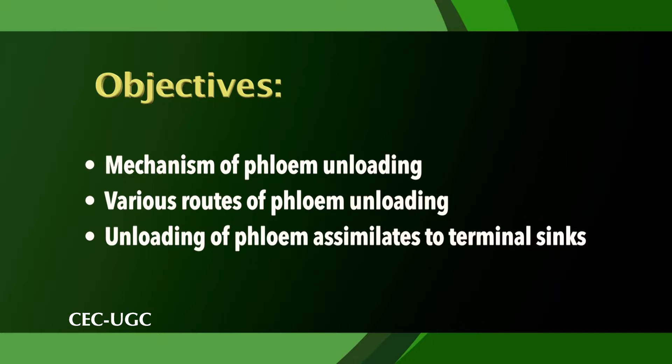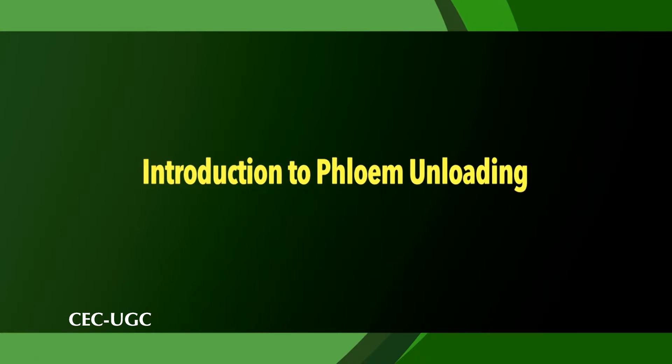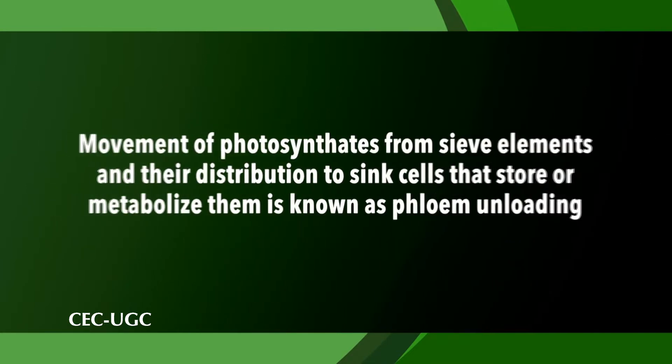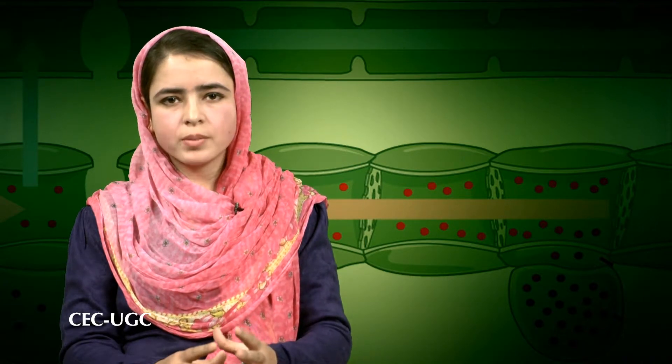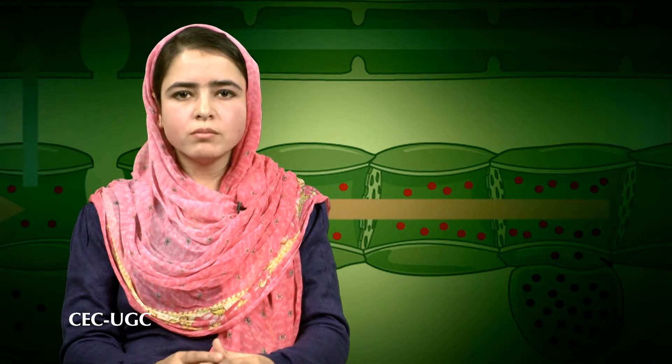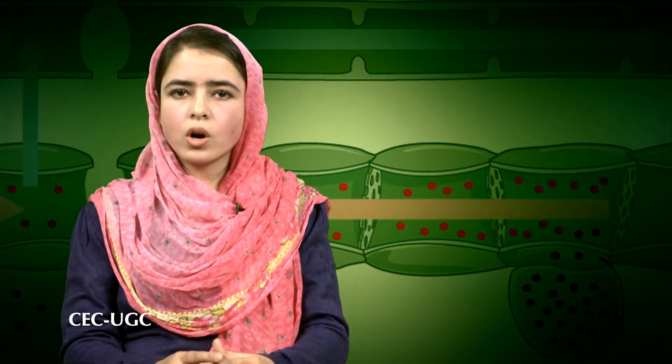Number four, to understand the mechanism of phloem unloading; number five, to gain knowledge about various routes of phloem unloading and to understand the unloading of phloem assimilates to terminal sinks. First of all, let's have a brief introduction of phloem unloading. The movement of photosynthates from the sieve elements and their distribution to the sink cells that store or metabolize them is known as phloem unloading.